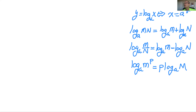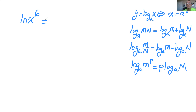Then we're going to combine them all into one big one. Say you had the natural log of x to the sixth. Using the power rule, we bring the six out front. So the p value is six, giving us 6 times the natural log of x.